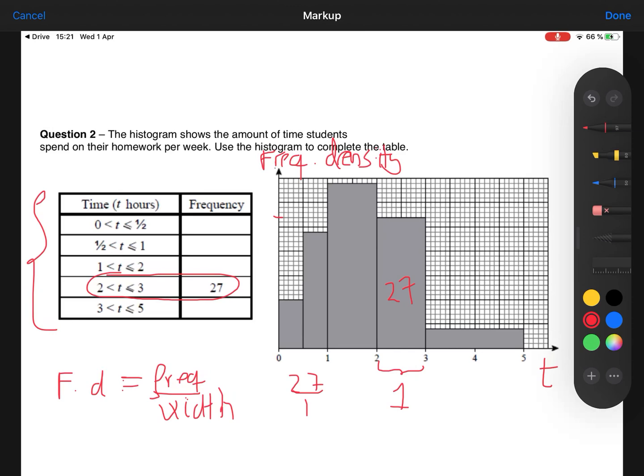Now if you think about it now, I've got 5, 10, 15, 20, 25, 27. So each square, each tiny square is 1. It's a unit of 1.